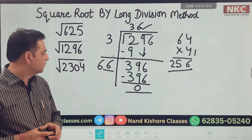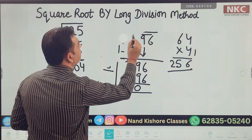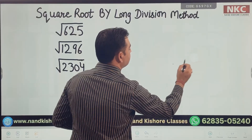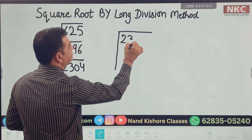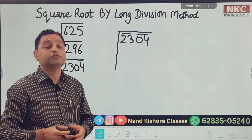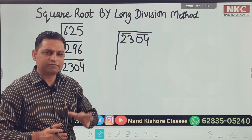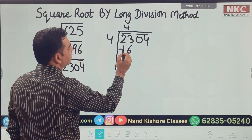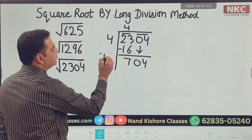I hope you are able to understand it. Now check the last one: square root of 2304. I am going to show you how it can be found easily. Write 2304 and make pairs from the end. I know my first pair is 23, which is not a perfect square. Lesser than 23, the perfect square is 16. That means I need to go with 4. 4 multiply 4 is 16. 23 minus 16 is 7, and 04 comes down. I get 704.